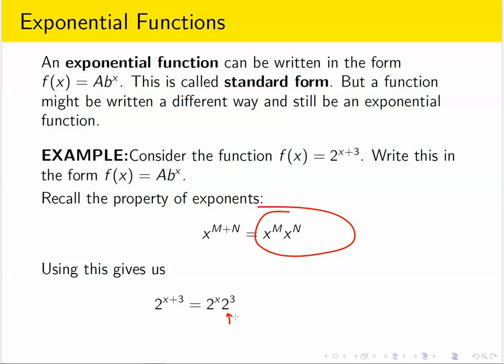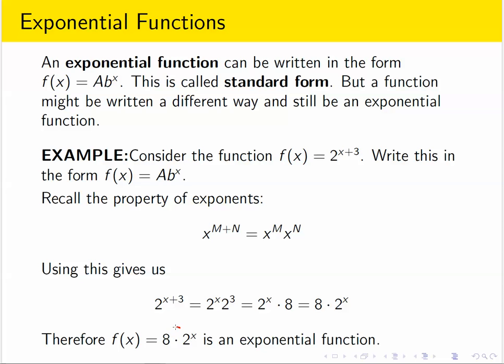Now 2 to the 3, we can simplify that some more. 2 to the 3 is just 8. And these two things are being multiplied together and it doesn't matter the order that you multiply numbers. So we can write the 8 first before 2 raised to the x. And now that's the form we want.